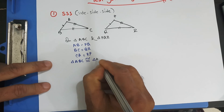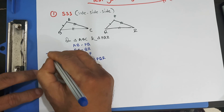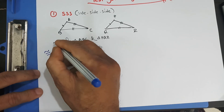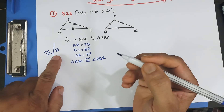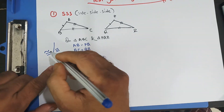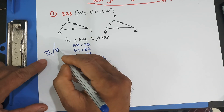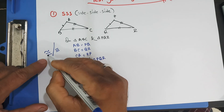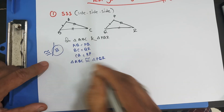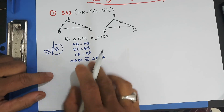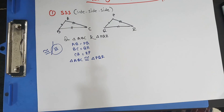We can write congruent using this symbol — the congruent symbol. Sometimes we write it like this. This is what most teachers and books use for congruence. So this is the congruent symbol, and this is one of the tests of congruency for triangles.